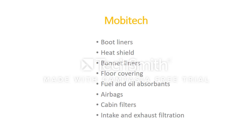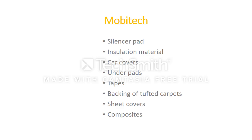The automotive industry is also a huge consumer of textiles. You can see boot liners, parcel shelves, heat shields, bonnet liners, boot floor coverings, fuel and oil filtration — filtration being one of the biggest fields of nonwovens, used in every automobile. Besides these, airbags, cabin filters, engine intake and exhaust air filters, silencer pad insulation, car covers, under-padding, car mats, tape backing for tufted carpets, seat covers, door trims, insulation, floor coverings, and composites are all part of mobile technology. These are the many fields in which technical textiles are being used.